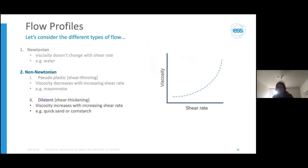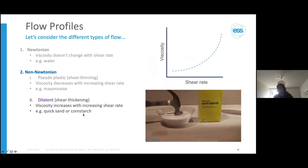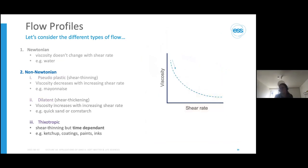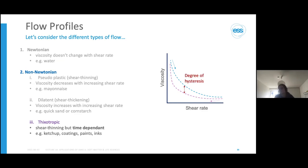We then have dilatant or shear-thickening materials, where viscosity increases with shear rate—for example, quicksand or cornstarch. If you hit cornstarch hard with a hammer you get resistance, but if you push slowly it goes in easily. When you hit something hard, the energy dissipates rapidly and molecules reorganize into a resistive structure. We also have thixotropic materials, which are shear-thinning but time-dependent—like ketchup. You can see shear-thinning followed by a time-dependent viscosity recovery when the shear rate drops off, giving a degree of hysteresis.